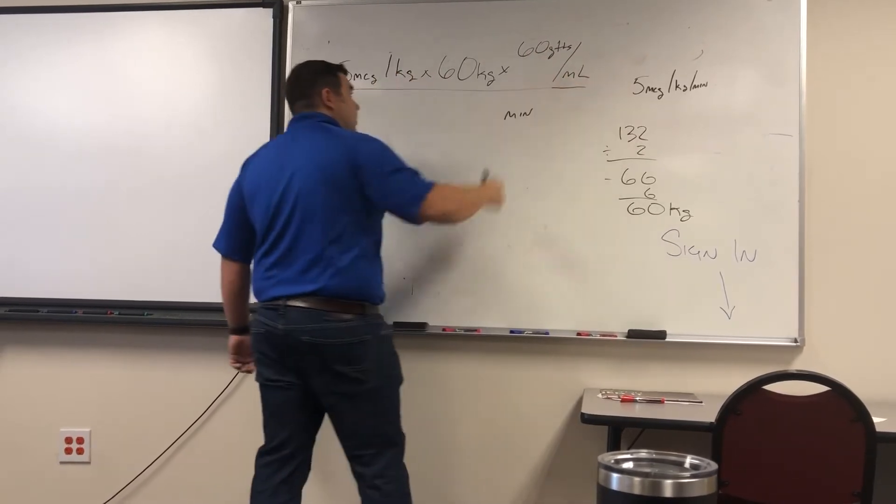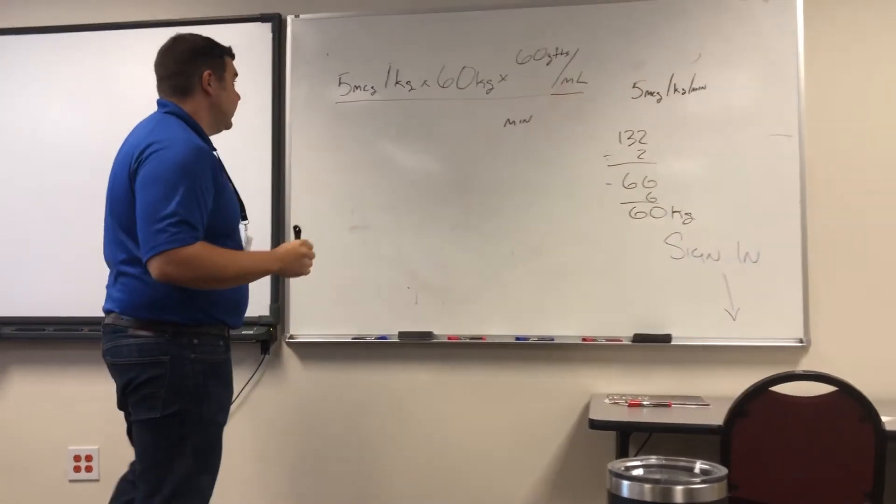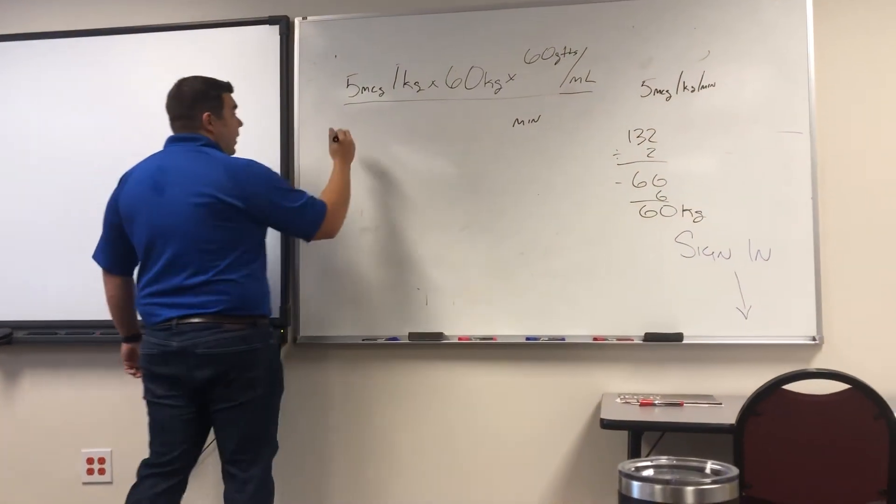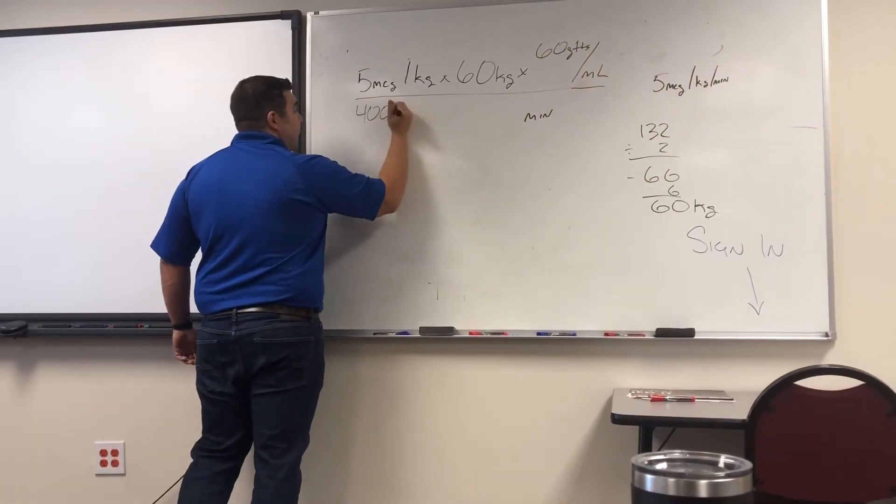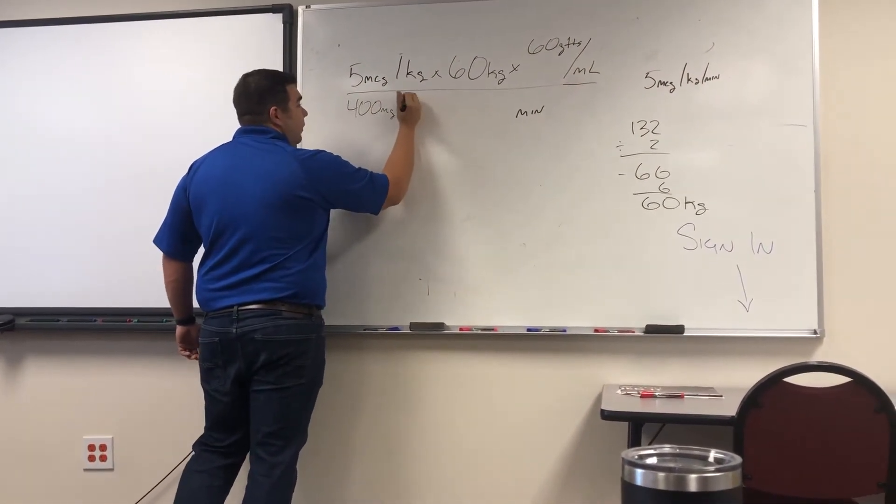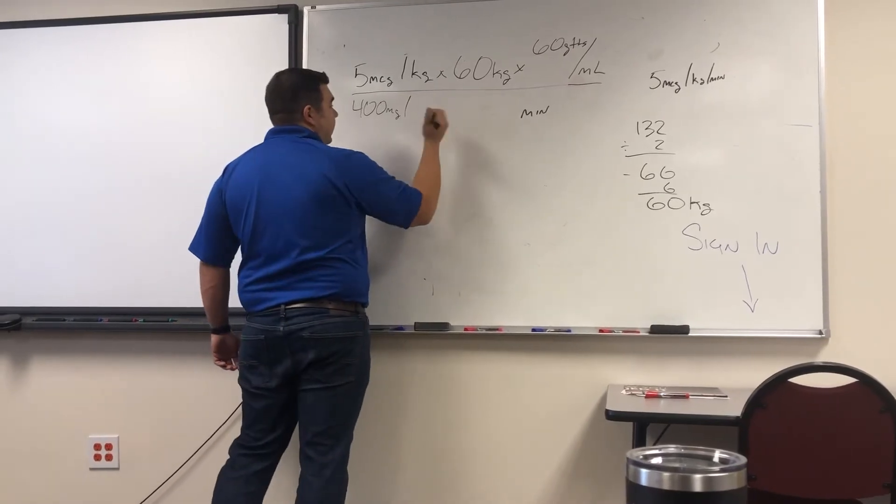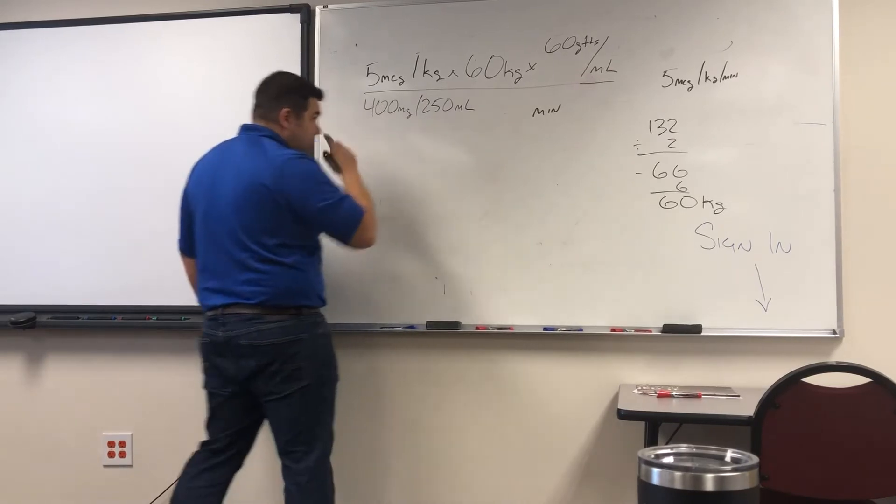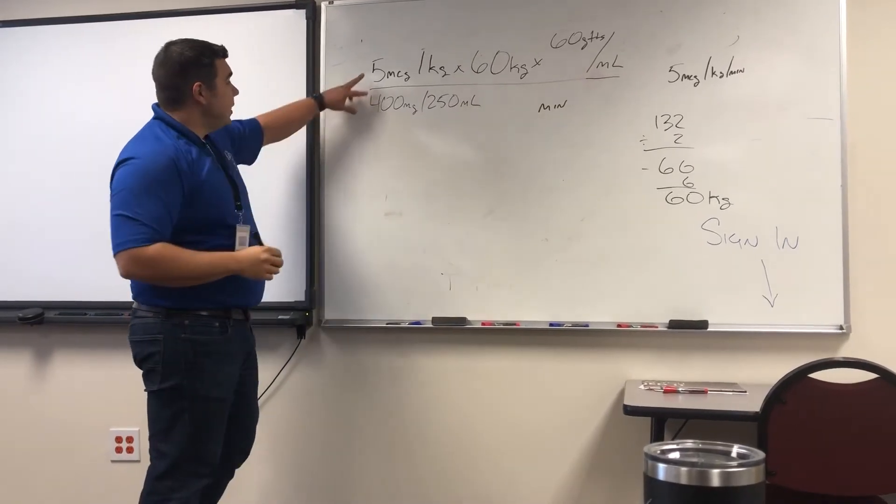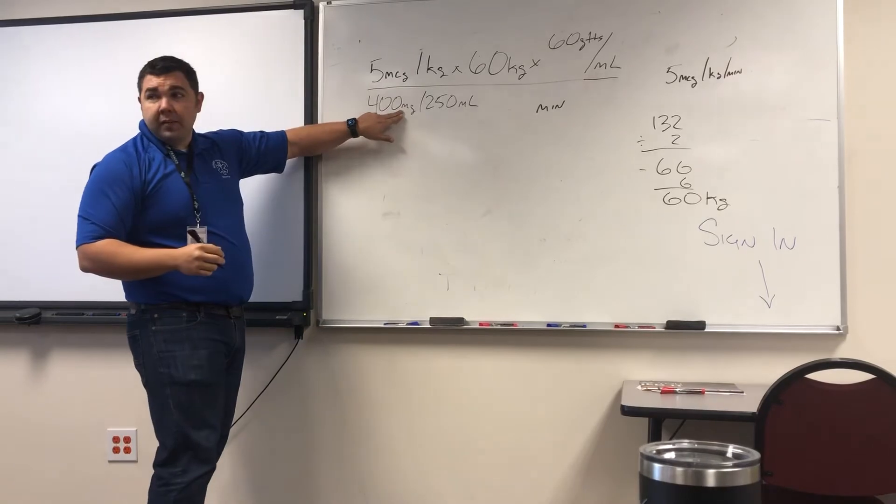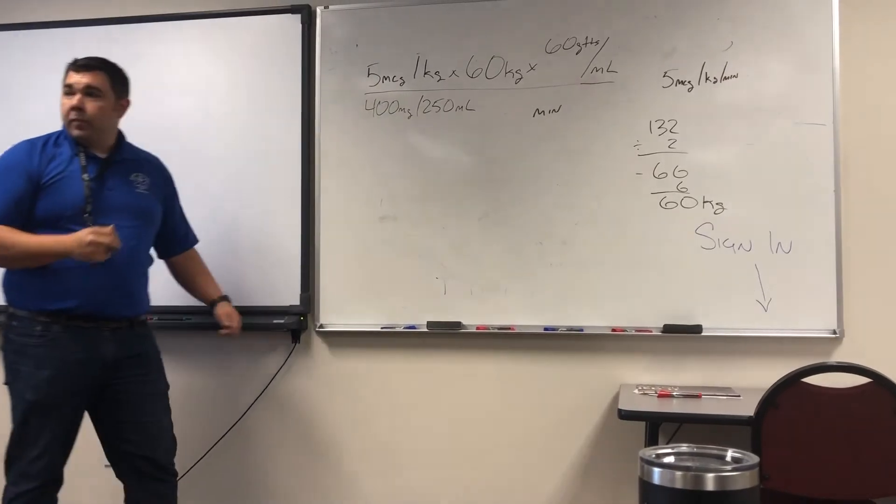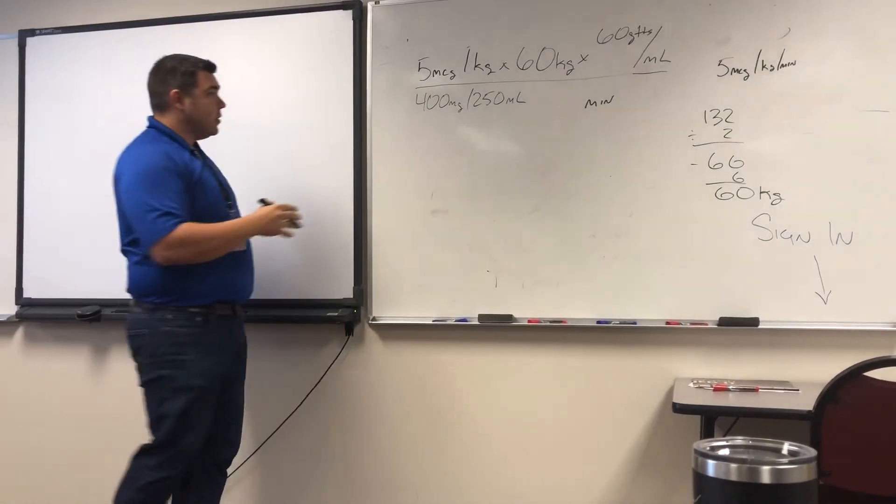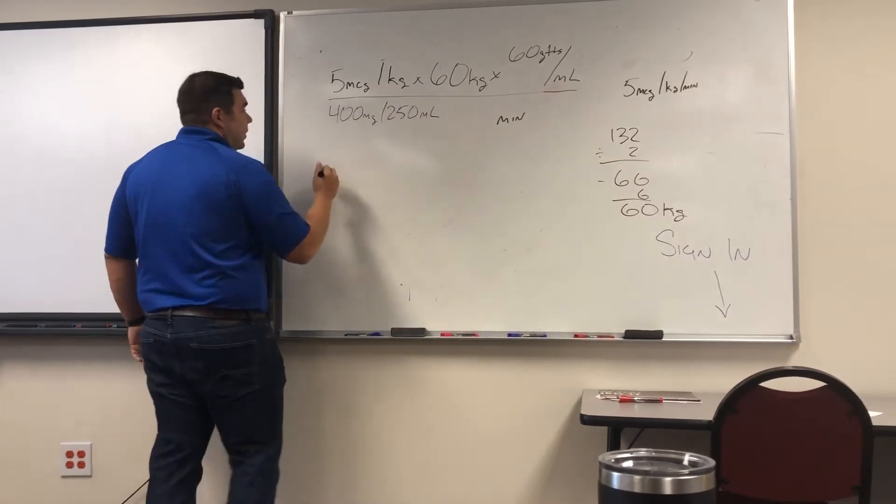That tells me what? Every 60 drops gives me how many milliliters? One. One, very good. And then we're going to take a 400 milligram vial of this dopamine and I'm going to put it into a 250 milliliter bag. What's the first thing I'm going to have to do? I'm going to have to convert this milligrams to micrograms. I want my concentration measured to be the same as my desired dose.